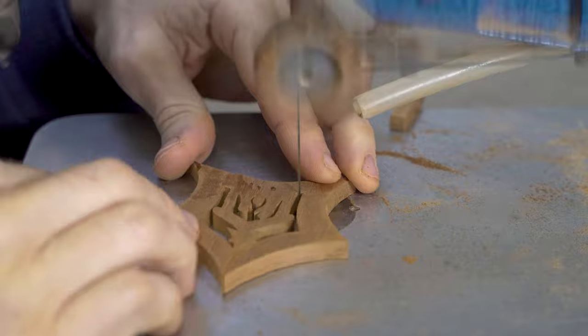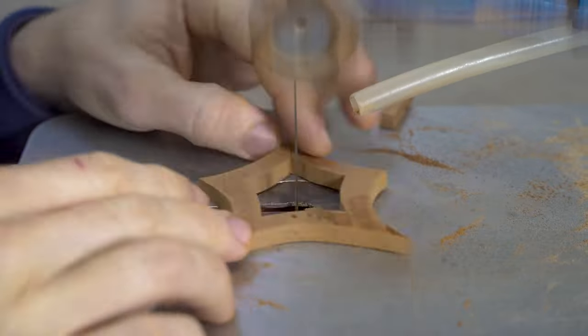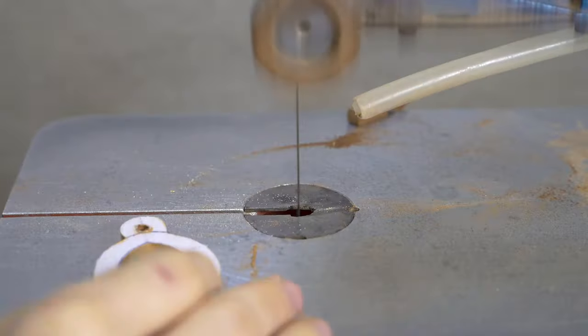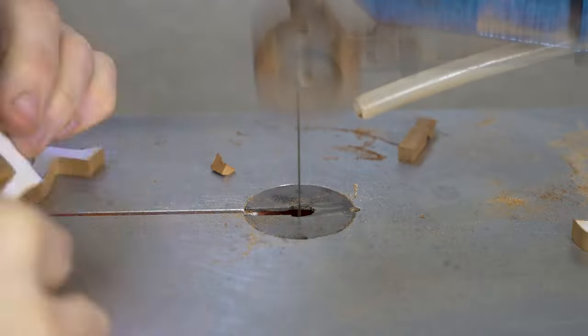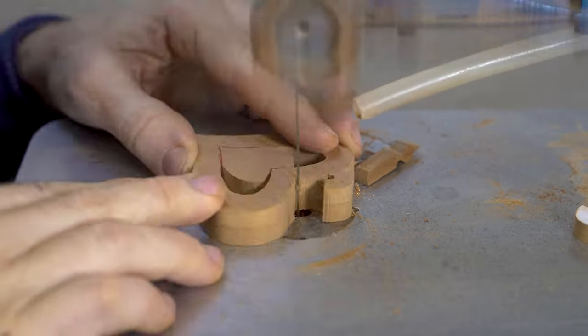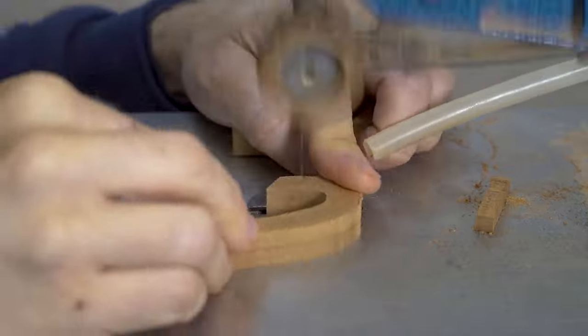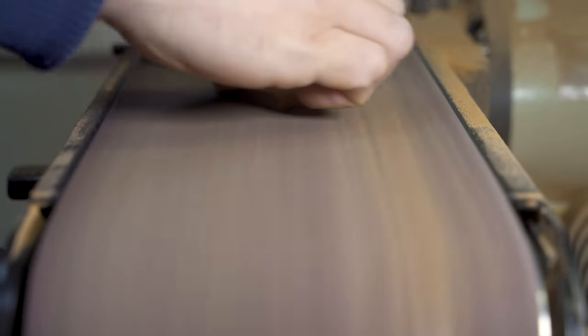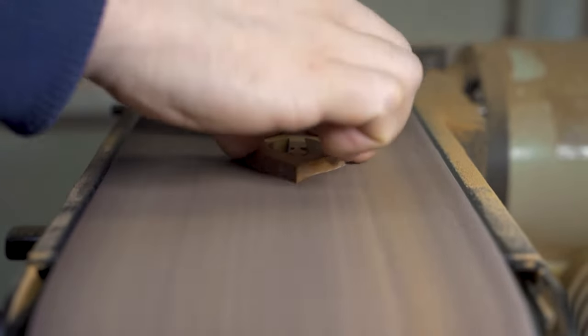This process will be repeated with the nativity scene where we cut that away from the inside of the star and cut the star in half, as well as the heart with the surround. The bell and the ichthys do not have internal elements so these can just be cut in half to be used later on and create our 3D decorations.